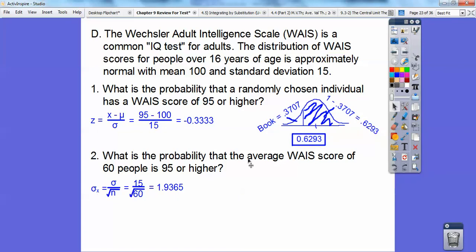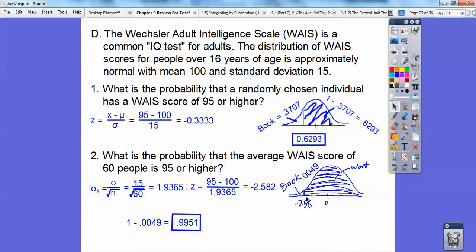So this one says, what's the probability that an average WAIS score of 60 people is 95 or higher? This is when the only thing that changes is my standard deviation. So it's going to be the population standard deviation divided by the square root of n. So here I get 1.933. That's my standard deviation. Still it's going to be 95 minus 100 right here. And then the 1.933 goes on the bottom. So I get a negative 2.582. So I want to see that graph right here. Here's negative 2.582. We want this side. My book's going to give me this side for negative 2.58. So it's going to be 1 minus that.